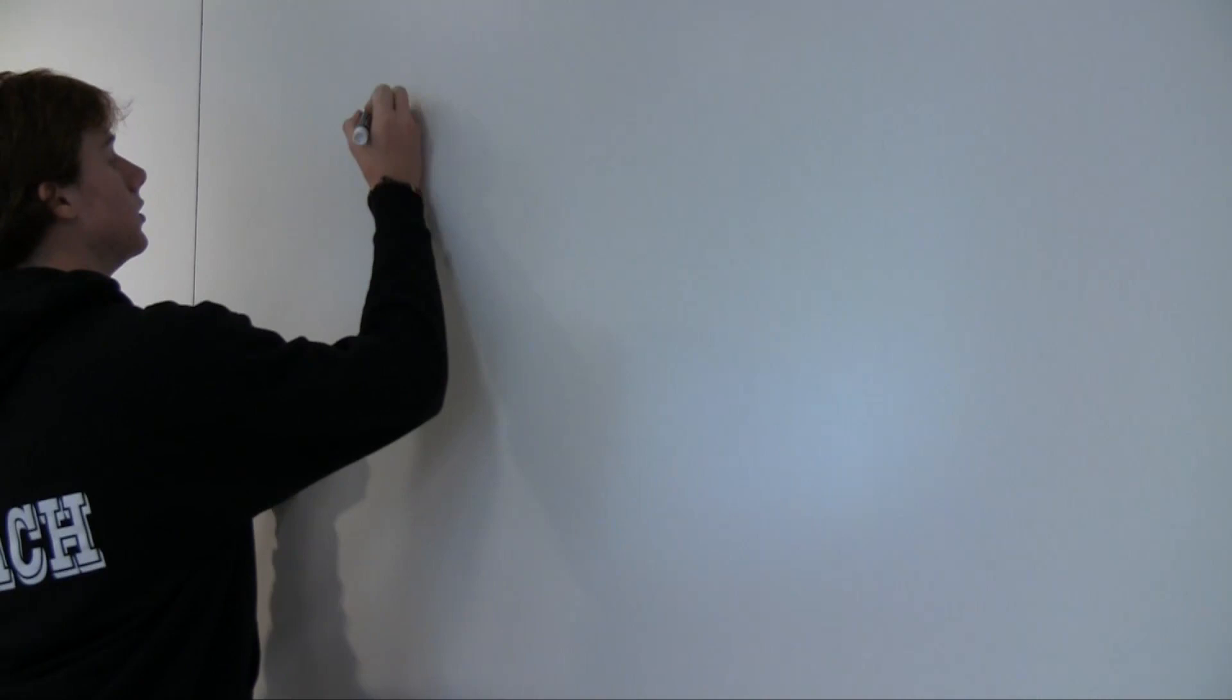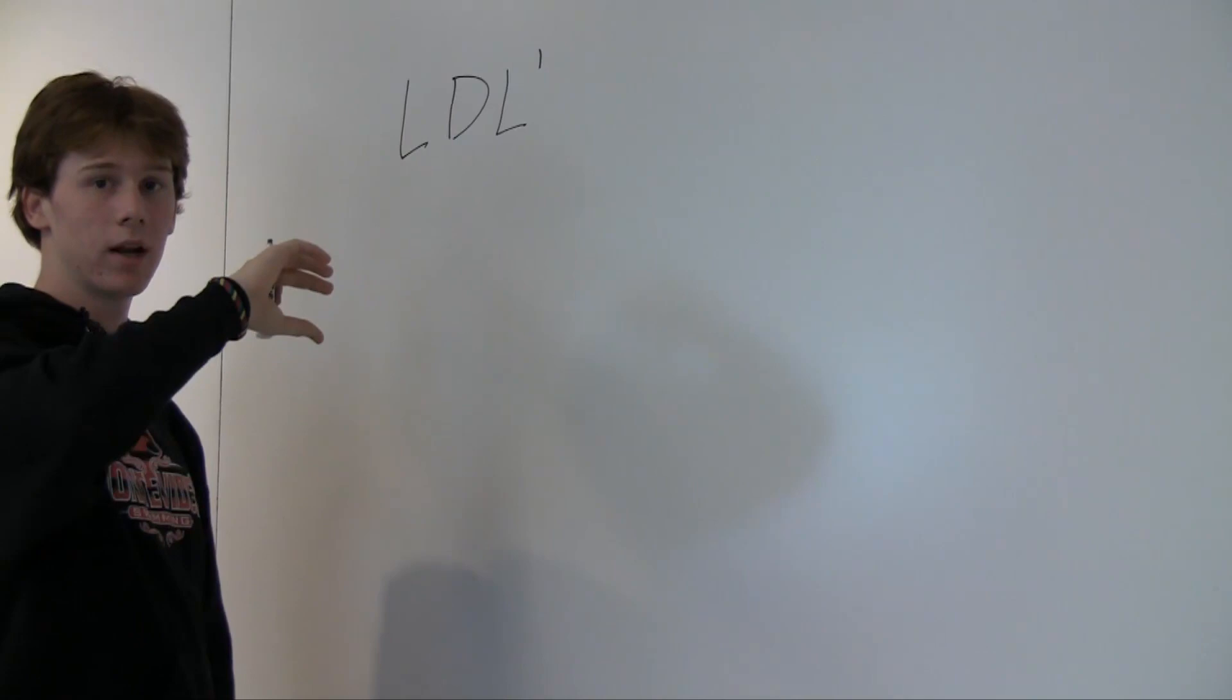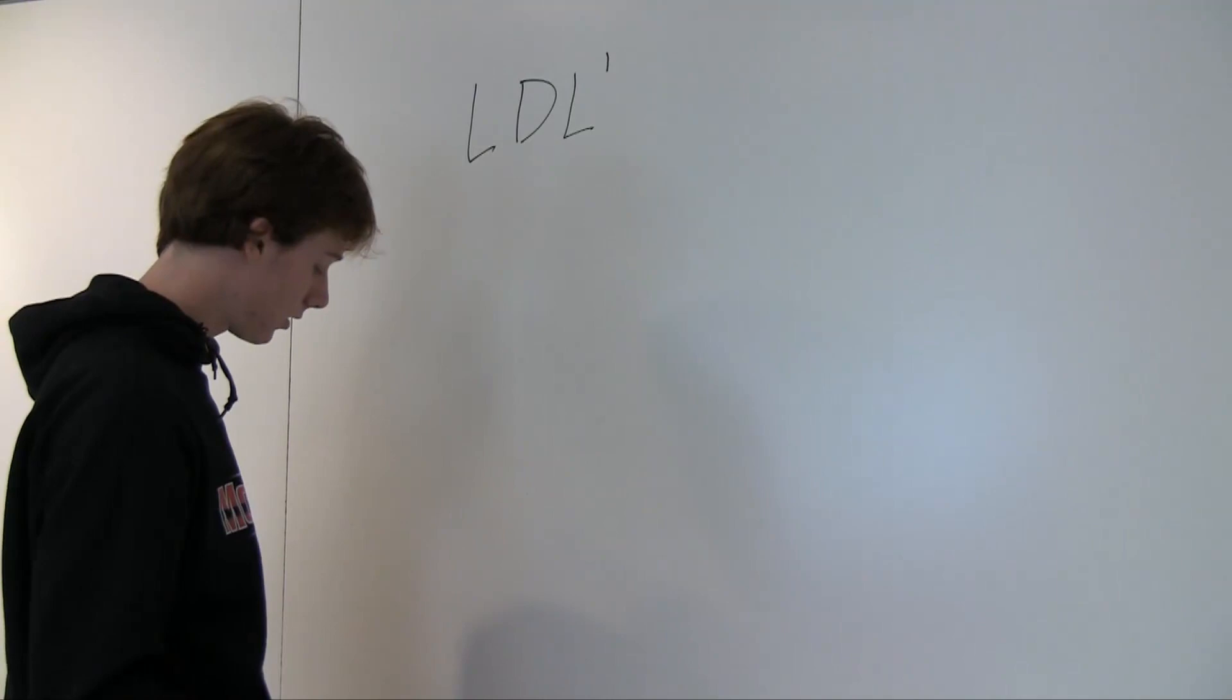So the corner one is either LDL inverse. The apostrophe stands for 90 degrees counterclockwise, just the letters 90 degrees clockwise on that face. The left downward face and then left again in the other direction.